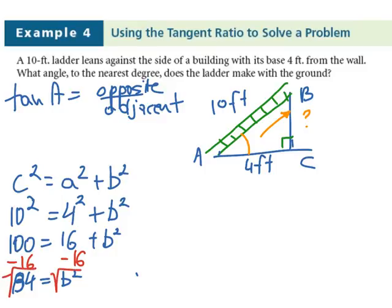And our missing side, which is the opposite side, equals 9.17.